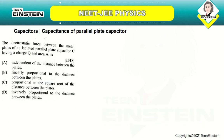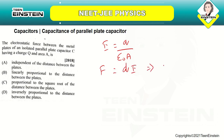The electrostatic force between the metal plates of an isolated parallel plate capacitor with charge Q and area A: The electric field E = Q/(ε₀A) and the force F = QE = Q²/(ε₀A). Since F depends only on Q, A and ε₀, F is independent of the distance between the plates. The correct answer is option A.